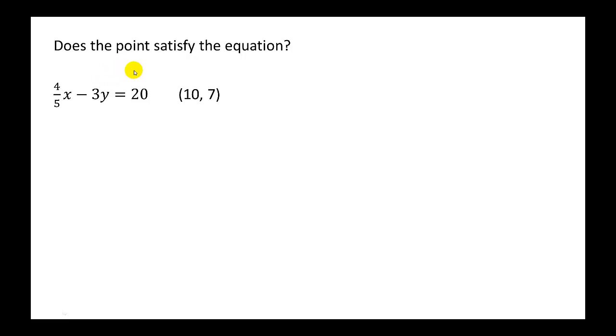Does the point satisfy the equation? In this case, we are given 4 fifths x minus 3y equals 20, and the point to check is 10, 7. So we need to remember that our points are always in the form x, y.